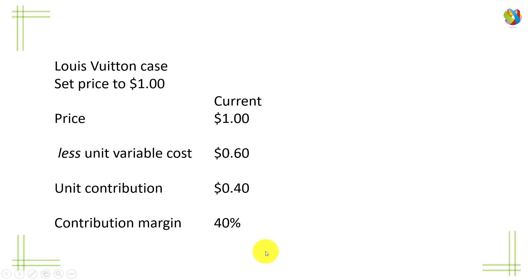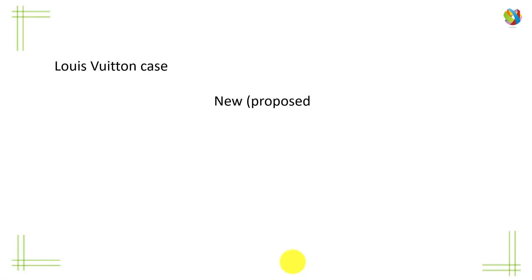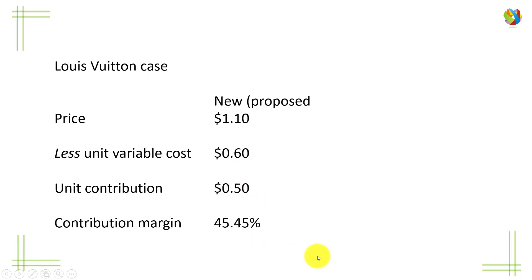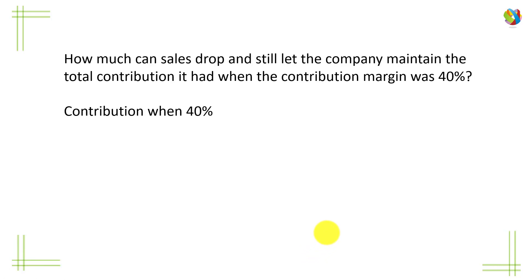In our case we're going to look at a price increase rather than a price decrease. The proposed 10% rise gives us a price of $1.10, less the variable costs which remain the same — the cost of labour and leather per bag is still 60 cents. The unit contribution will be $1.10 less 60 cents, which is 50 cents. We divide 50 by $1.10 and get 45.5% — actually 45.5 recurring, but that's good enough. How much can sales drop and still let the company maintain the total contribution it had when the contribution margin was 40%?